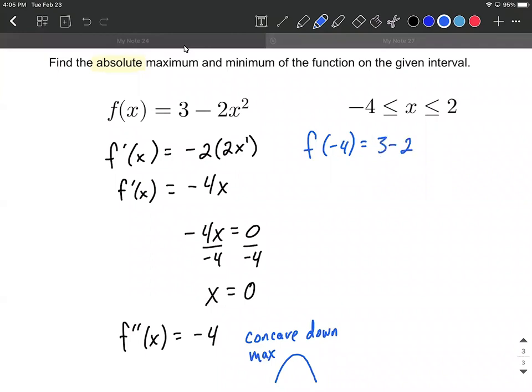So we can say 3 minus 2 times (-4)² is going to work out to be, with a little bit of arithmetic here, -29. We're going to plug in 0, the value that we actually found from the first derivative. 3 minus 2 times 0² is 3.